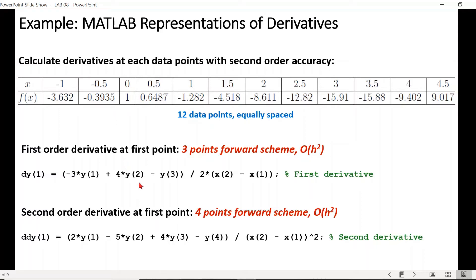For the second derivative at the first data point, we require four data points to ensure that the scheme is second-order accurate.